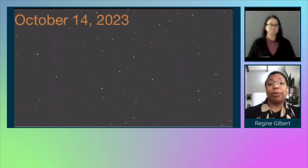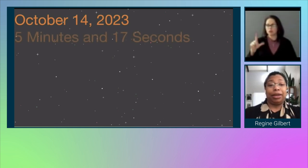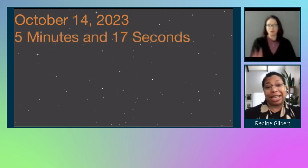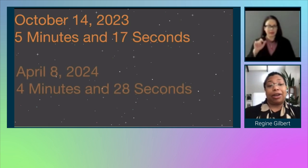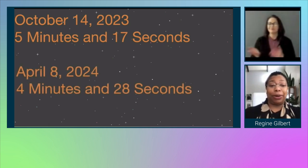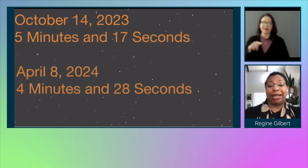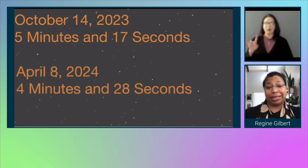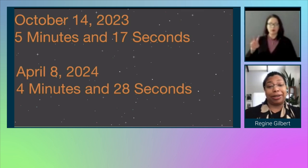On October 14, 2023, for 5 minutes and 17 seconds, there will be an eclipse. And on April 8, 2024, for 4 minutes and 28 seconds, there will be another eclipse.